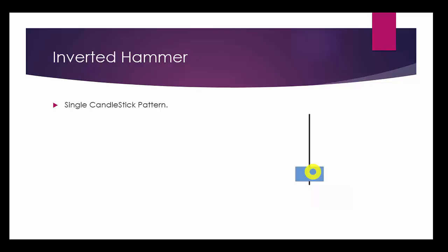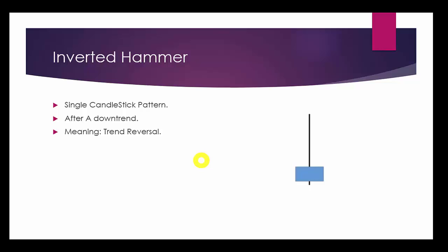First of all, it is a single candlestick pattern made up of just one candle. We will find the inverted hammer candlestick pattern after a strong downward trend. Basically, it means trend reversal — the current or preceding trend will be changed after such a single candlestick pattern found after the downward trend.